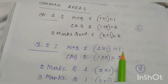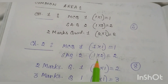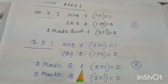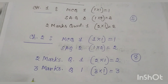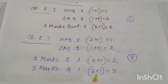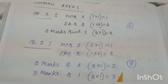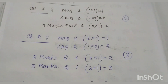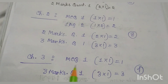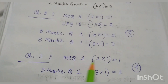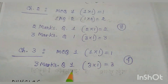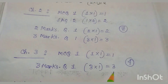Chapter 2 continued: 1 SAQ, 1×1 = 1 mark; 1 question of 2 marks, 1×2 = 2; 1 question of 2 marks, 2×1 = 2; 1 question of 3 marks, 3×1 = 3. Total 8 marks from Chapter 2. Chapter 3 — 1 MCQ, 1×1 = 1 mark; 1 question of 3 marks, 3×1 = 3. Total 4 marks from Chapter 3.